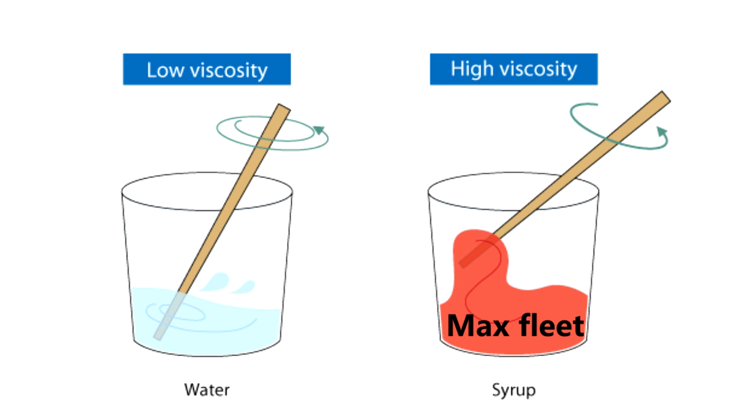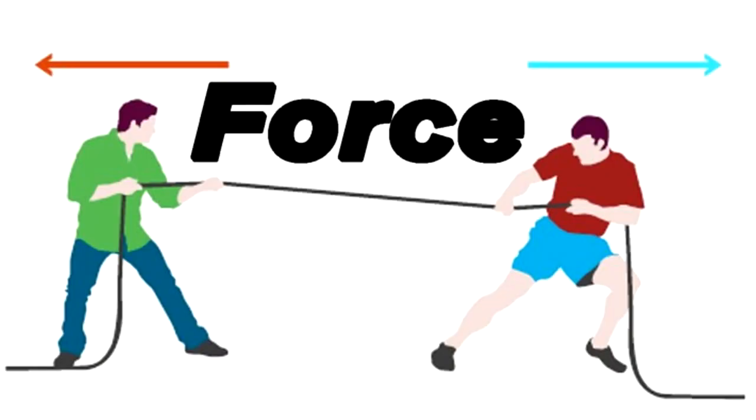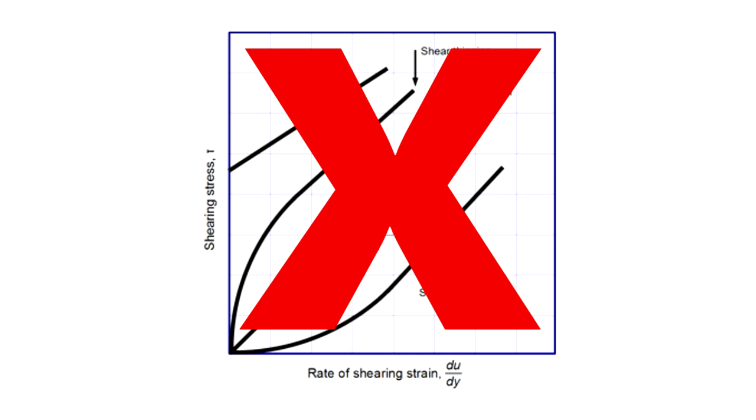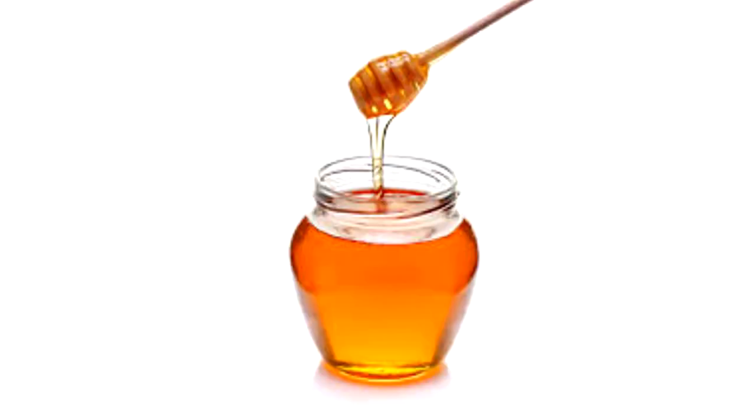The Max Fleet is a non-Newtonian lube, which means the viscosity changes when force is applied, which is against Newton's law of viscosity, hence its name, non-Newtonian. Other examples of non-Newtonians are ketchup and honey. With that being said, let's test them out.